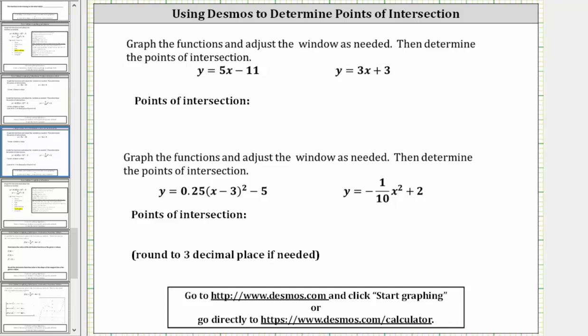This lesson will show how to use Desmos to graph two functions on the same coordinate plane, adjust the window, and determine any points of intersection. Remember, the points of intersection would represent the solutions to the system. In the first example, we were given y equals 5x minus 11 and y equals 3x plus 3.